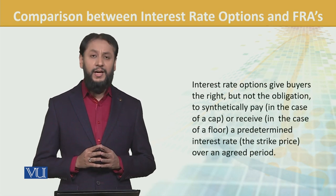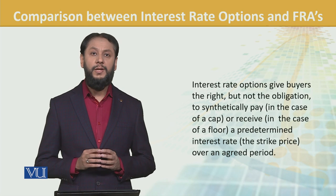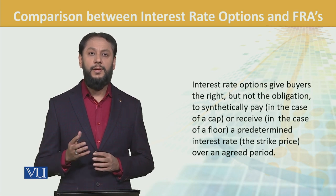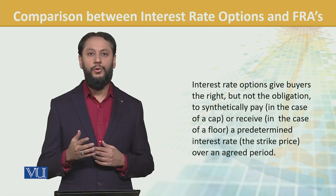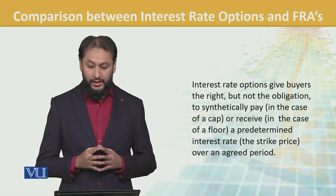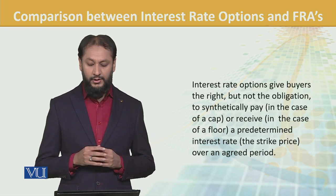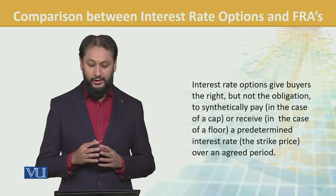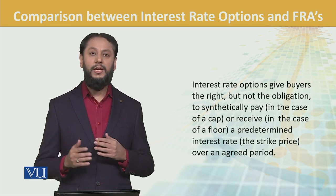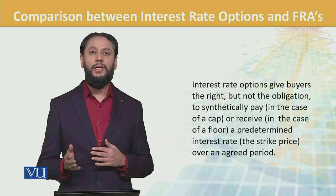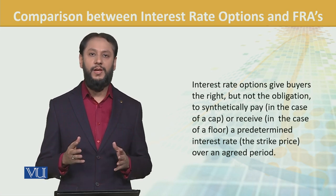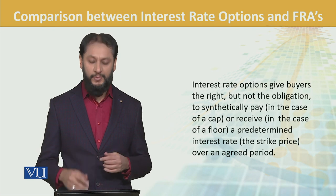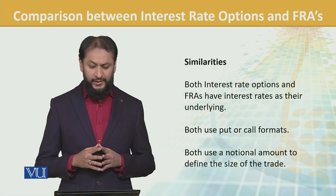An interest rate option gives the buyer the right but not the obligation — this is the main difference. In a FRA, there is a commitment to synthetically pay or receive the pre-determined rate over an agreed period. With options, the choice element exists, which is not the case with FRAs.